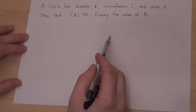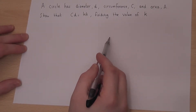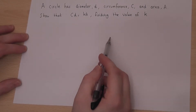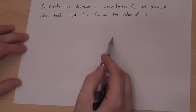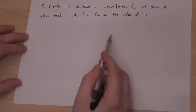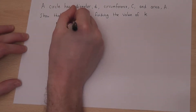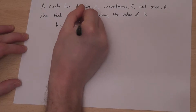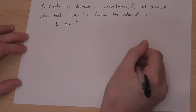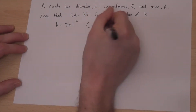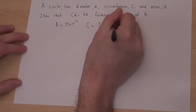This video looks at rearranging formulae, in particular the formulae linked to the area and circumference of a circle. We know that the area of a circle is pi times radius squared, and the circumference is 2 times pi times r.